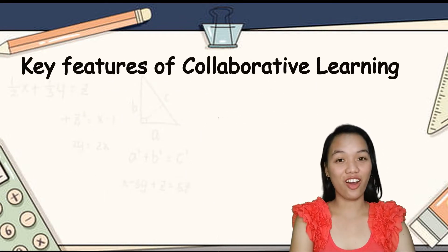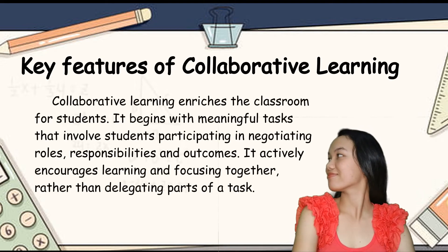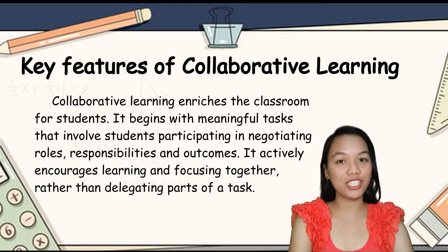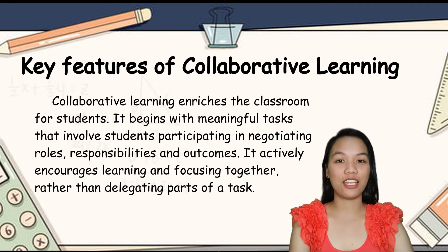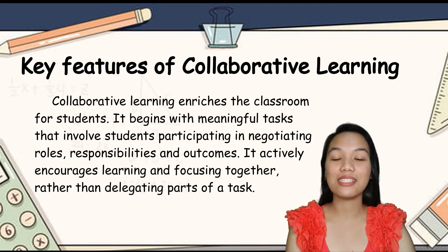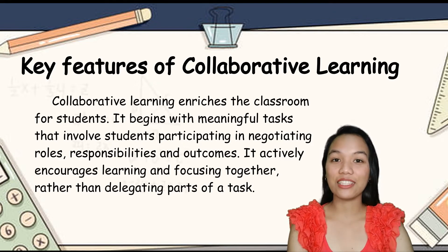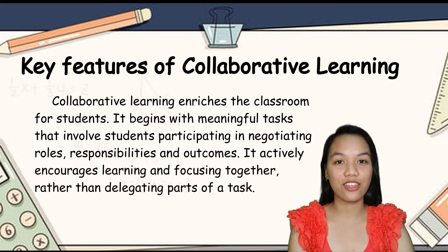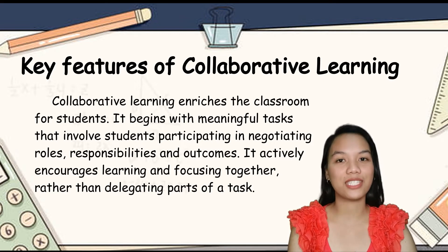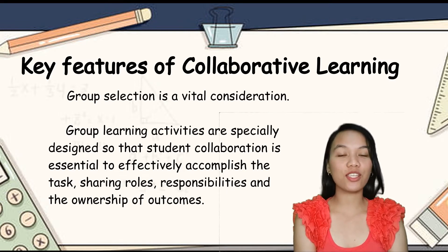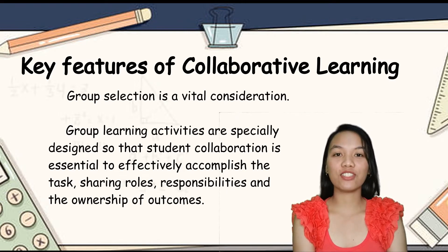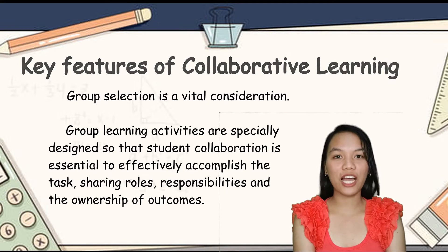The key features of this strategy are: Collaborative Learning enriches the classroom for students. It begins with meaningful tasks that students participate in by negotiating roles, responsibilities, and outcomes. It actively encourages learning and focusing together rather than just delegating parts of the task. Group selection is a vital consideration. Group learning activities are specially designed so that student collaboration is essential to effectively accomplish the task, share roles, responsibilities, and the ownership of outcomes.